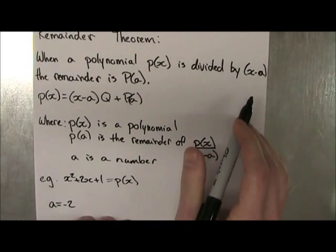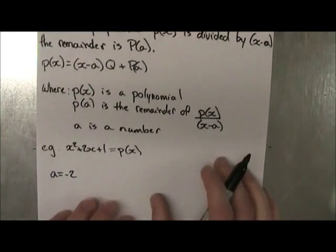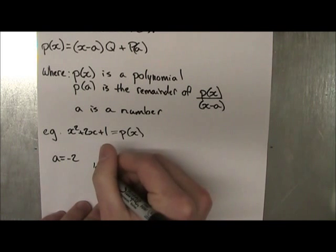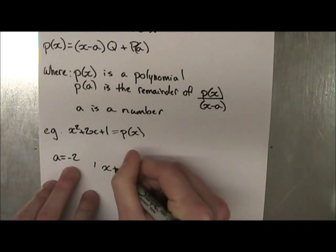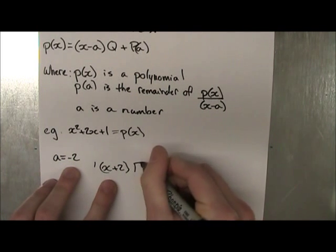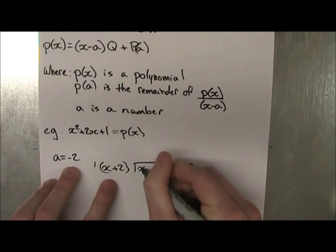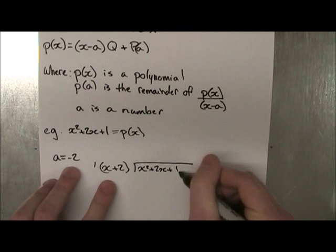So then our factor, or not our factor, but our expression would be x minus a. So x minus minus 2 is x plus 2. So this is our expression. And we're going to be dividing it by our polynomial to find what the remainder would be.